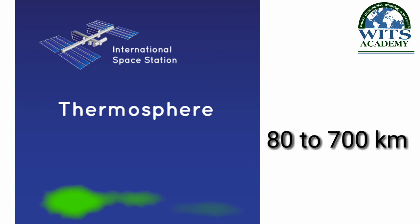Thermosphere — yeh layer mesosphere ke baad shuru hoti hai aur zameen se takreeban 80 kilometer se lekar 700 kilometer ki bulandi tak ya usse aage tak paai jaati hai. Suraj ke qareeb hone ki waja se is layer ka darja hararat bahut zyada hota hai, jis ki waja se yeh din ke time 2000 degree Centigrade tak garam ho jaati hai. Suraj se aane wali tamam shuaen isi layer mein absorb hoti hain. Tamam international space stations aur satellites isi layer mein paae jaate hain jo signals aur communication ka kaam karti hain. Isi layer mein ek aur layer bhi paai jaati hai jise hum ionosphere kehte hain, jo suraj ki ultraviolet radiation ko absorb karke molecules ko ions mein change kar deti hai.